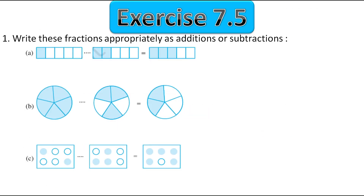Here is the first question: write these fractions appropriately as additions or subtractions. They have given some pictures. In the first one they have given some rectangles with five parts — in the first rectangle one part is shaded, here two parts are shaded, and here three parts are shaded. So we have to check which operations they have performed. We will write the fractions. For the first one the fraction is 1 upon 5 because out of 5 parts one part is shaded.